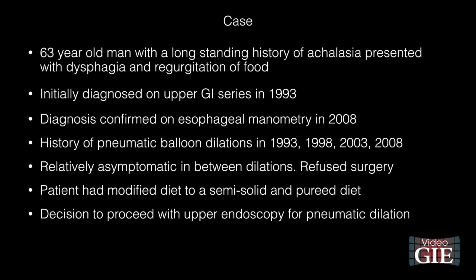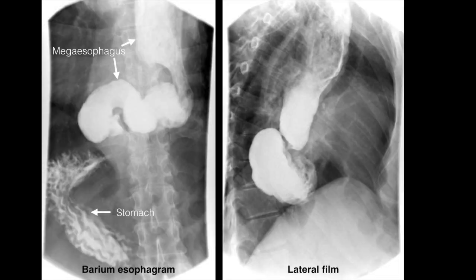We decided to proceed with upper endoscopy for pneumatic balloon dilation. Previous barium esophagram had shown a markedly dilated and redundant esophagus with pooling of contrast, absence of peristalsis, and very slow passage of contrast into the stomach, consistent with achalasia.